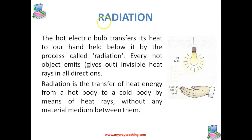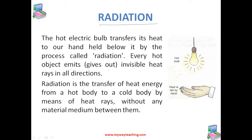Now let us study another method of transferring heat, that is radiation. When you switch on an electric bulb, it becomes hot and gives out heat and light. If we keep our hand a short distance below this bulb, as you can see in this figure, we can feel its heat on the hand. This means that the hot electric bulb cannot transfer its heat to our hand by conduction because air is a poor conductor of heat.